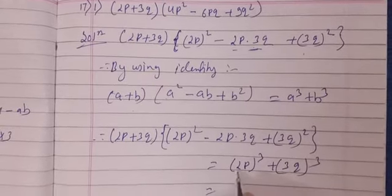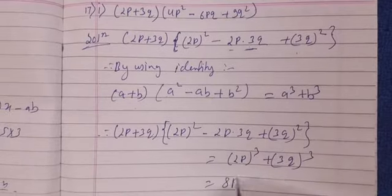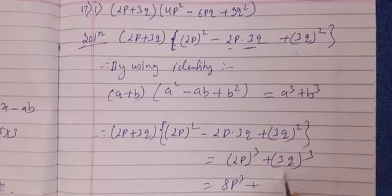So here is 2 × 2 = 4, 4 × 2 = 8, so 8p³, and 3 × 3 = 9, 9 × 3 = 27, so 27q³.